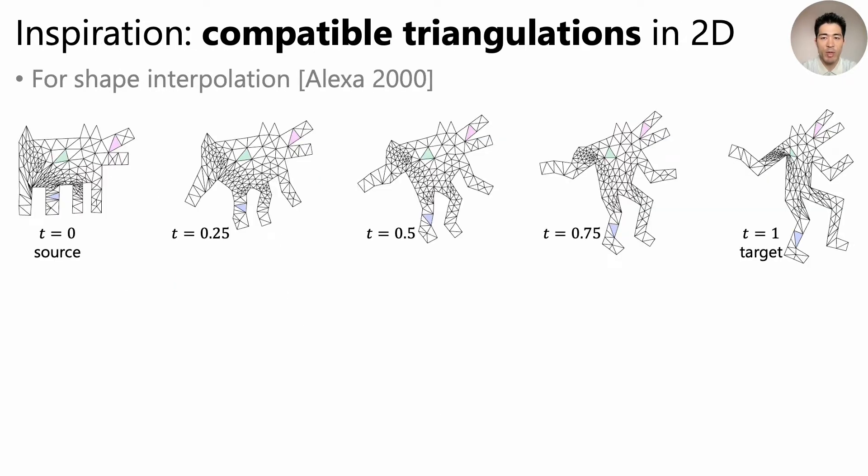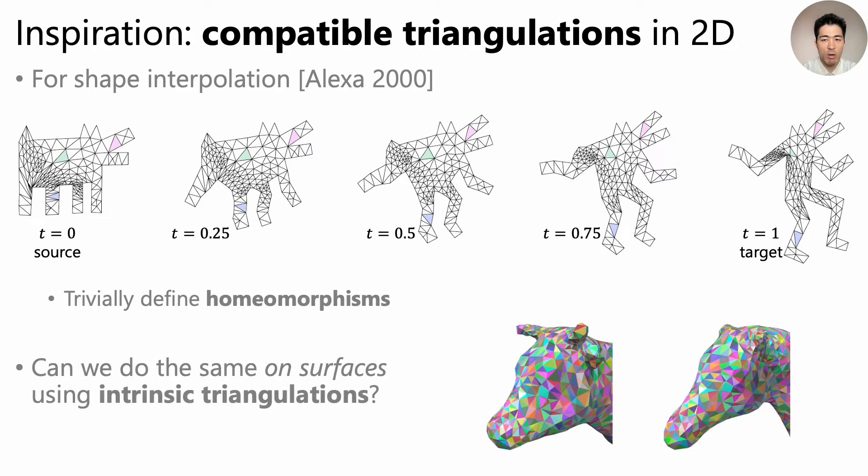Another source of our inspiration is the concept of compatible triangulations in 2D, which was used for shape interpolation. In this example, a source shape on the left and a target shape on the right are interpolated using a compatible triangulation. Here, every face is in one-to-one correspondence as highlighted by colors in some faces. So this trivially defines a homeomorphism between two 2D shapes.